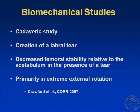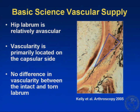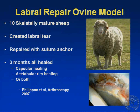A biomechanical study in a cadaveric model looked at creating a labral tear and found decreased femoral stability relative to the acetabulum in the presence of a tear, primarily in the extremes of external rotation. Brian Kelly's study looking at the histology of the labrum shows it is primarily an avascular structure with the primary blood supply coming from the capsular side. However, in a study by Mark Philippon looking at ten skeletally mature sheep, a labral tear was repaired with a suture anchor and at three months all were healed — either by capsular healing, acetabular rim healing, or a combination of both.